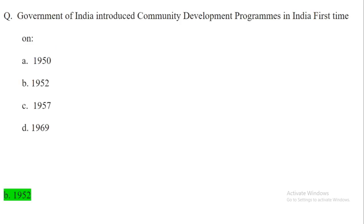Next question: When did the Government of India introduce the Community Development Programme (CDP) for the first time in India? The answer is 1952. The Community Development Programme was first introduced in India in the year 1952.